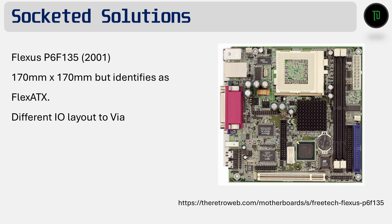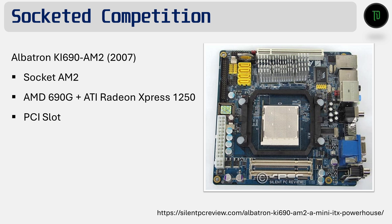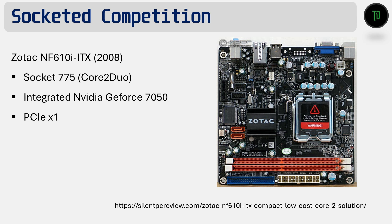It took Intel until 2007 to find interest in releasing a Mini-ITX motherboard. They cared so little that they didn't even bother using their own chipset — instead using an SIS-based chipset with an embedded single-thread Celeron processor based on the Conroe family of CPUs. It was around this 2007 to 2010 period that we started to see more reviews and articles surface around Mini-ITX. Chipsets were getting more compact and manufacturers were finding ways to jam even more into a small space. An AM2-based example from Albatron came with an ATI iGPU and used sodimm memory, presumably to save space. Zotac released an Intel Socket 775-based Mini-ITX board with a PCI Express x1 slot and an NVIDIA GeForce 7050 iGPU, perhaps a precursor to the cheaper NVIDIA ION platforms that would follow.